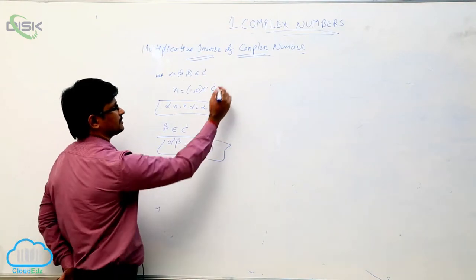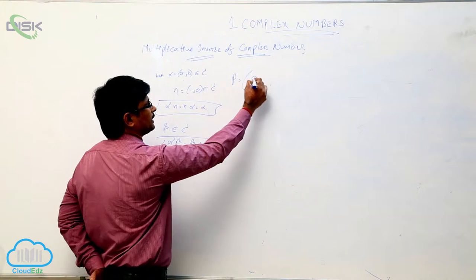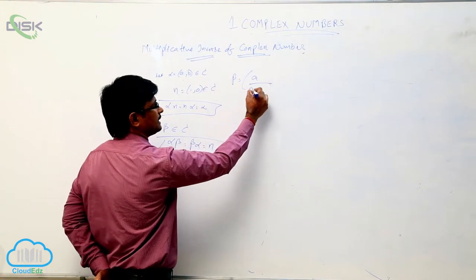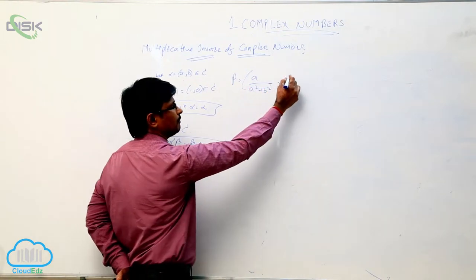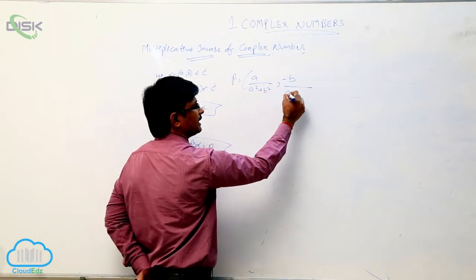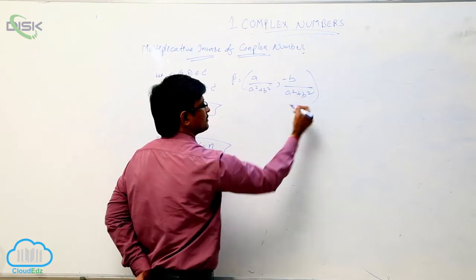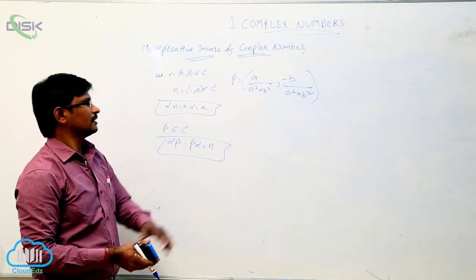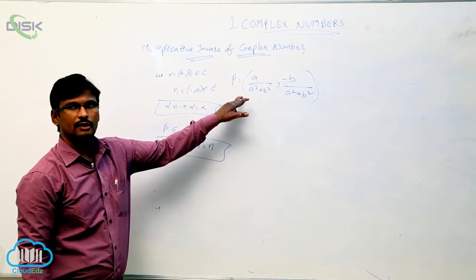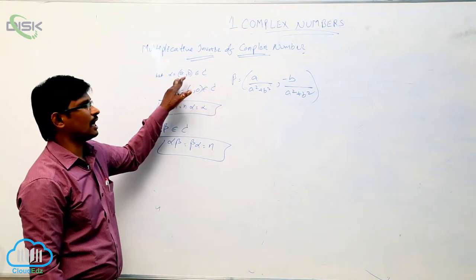So, beta equals (a divided by (a² + b²), minus b divided by (a² + b²)). This is called the multiplicative inverse of the complex number alpha.